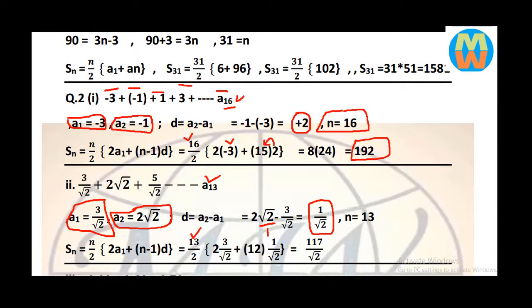2 times 3 equals 6, 6 plus 12 equals 18. 18 times 13 equals 234. 234 divided by 2 gives 117 over 2 square root 2. This is how we found the solution.